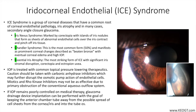Glaucoma develops in approximately 50% of ICE syndrome cases, and is more frequent in essential iris atrophy and iris nevus syndrome, which are discussed further below. The corneal endothelium has a beaten bronze appearance on slit lamp biomicroscopy and may mimic the appearance of Fuchs' corneal endothelial dystrophy.